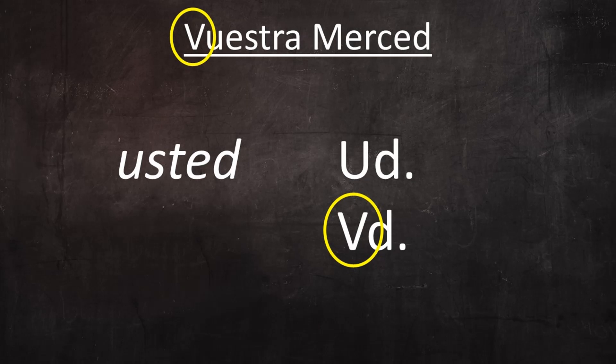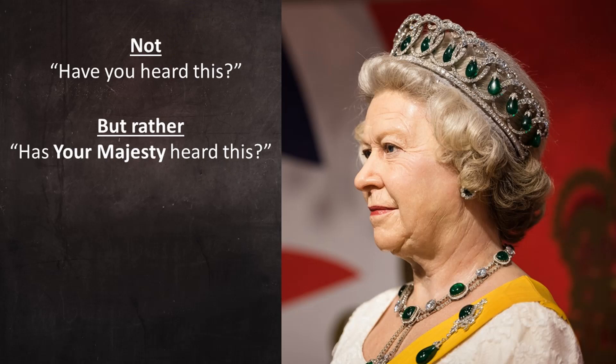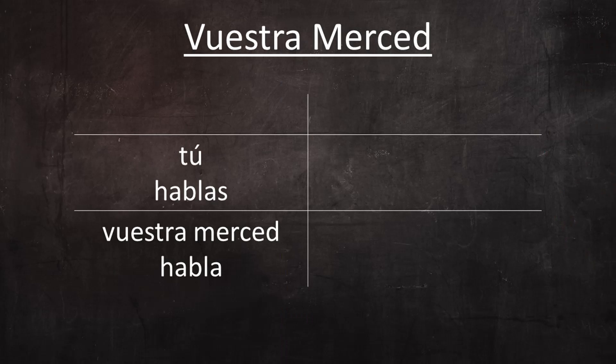In order to understand the grammar of ustedeo, it's very useful to compare vuestra merced to similar titles in English. For example, if a normal person were to ask the queen if she had heard something, the proper phrasing would not be 'have you heard this,' but rather 'has your majesty heard this?' Although that person is speaking to her, the verb form that accompanies the title 'your majesty' is the third-person verb form, as if speaking about her in the third person. In the same fashion, when Spanish speakers used the title vuestra merced, the verb forms and other grammar elements were all third-person forms.